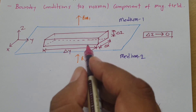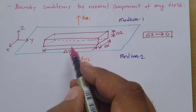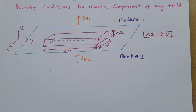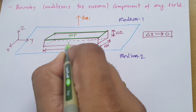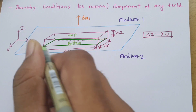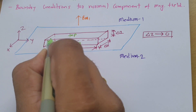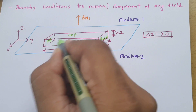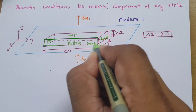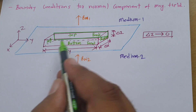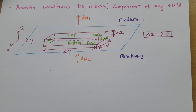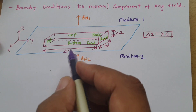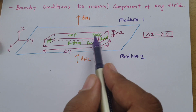For this rectangular surface there are six total surfaces: top, bottom, left, right, front, and back. Now we apply Gauss's law for magnetic fields, which states that for an enclosed surface, magnetic flux is zero.